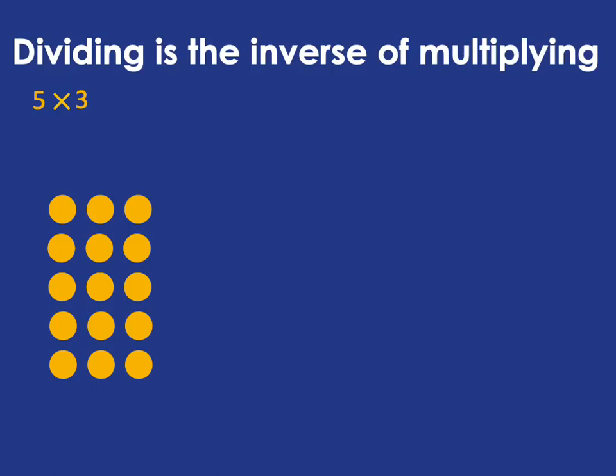So the first thing we need to know about dividing is that it's the inverse or opposite of multiplying. So if we think of multiplying 5 times 3 is 15, what that means is we've got 5 groups of 3 and that is 15.